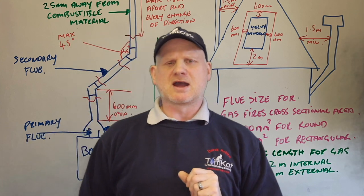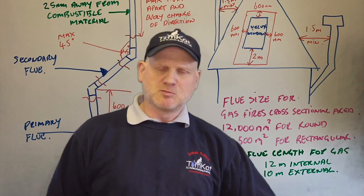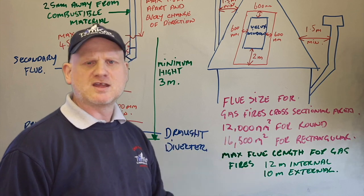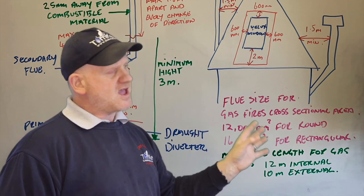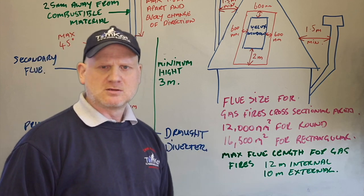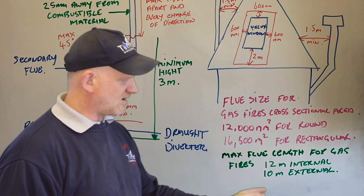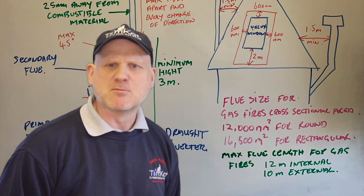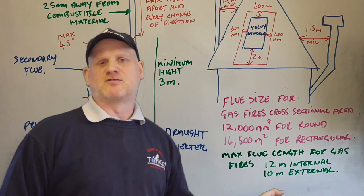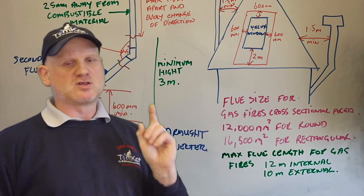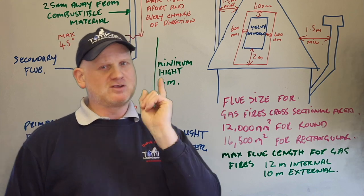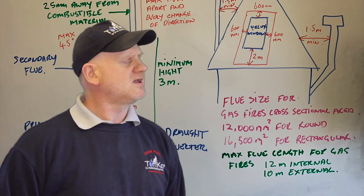That covers the main things for an open flued boiler. For open flued fires, the cross-sectional area for a round flue is 12,000mm² and for a rectangular one it's 16,500mm². The maximum flue length for a fire internally is 12 metres and externally is 10 metres. Remember, if it goes outside and is longer than 3 metres, it still needs to be insulated.